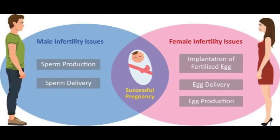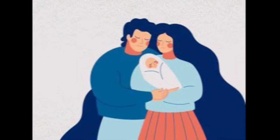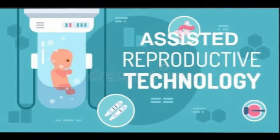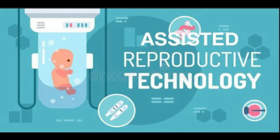Infertility in males is due to low sperm count, and in females it is due to failure to ovulate. After all these problems, certain techniques have been introduced for these couples to conceive a child — and that is Assisted Reproductive Technologies or ARTs.